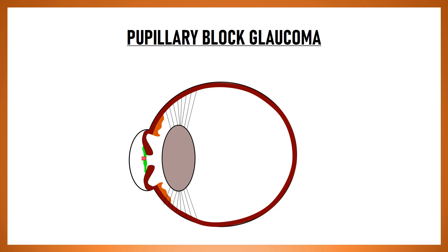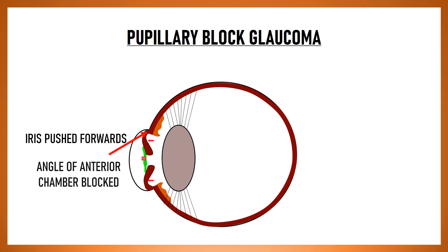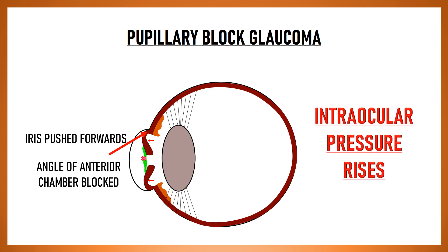Now since this is a closed space, the continuous production of aqueous humor in the posterior chamber would push the iris forwards and this would block the angle of the anterior chamber, which in turn would block the drainage of aqueous humor and the intraocular pressure will rise and this is known as pupillary block glaucoma.